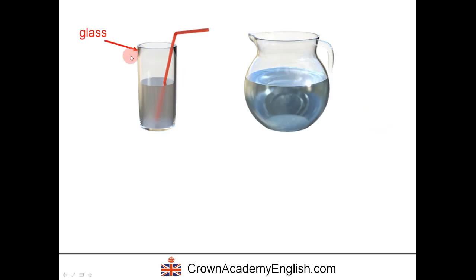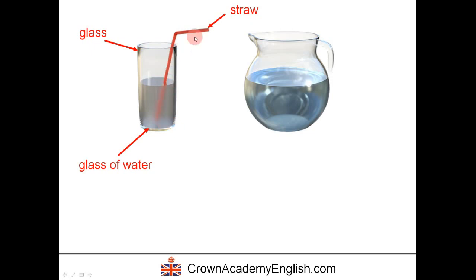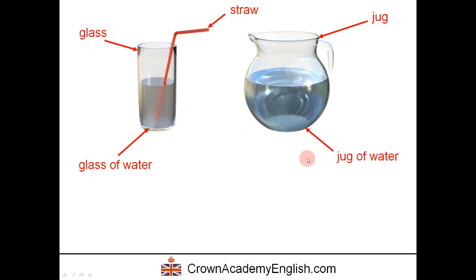This is a glass. Since it contains water, we say this is a glass of water. And this red object is called a straw — we drink the water through the straw, we suck the water through it. And this is called a jug — a large container that holds a large amount of liquid. Since it contains water, we say this is a jug of water.